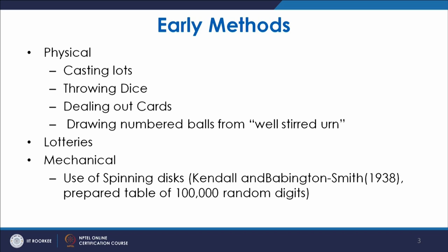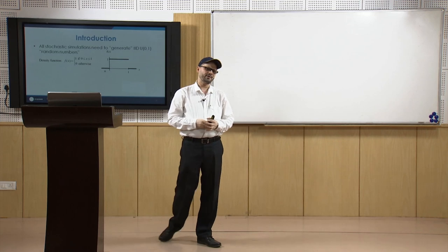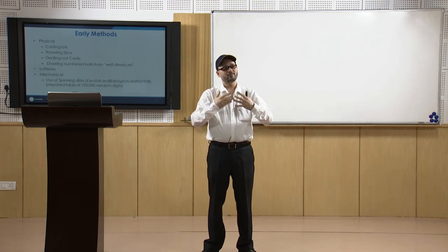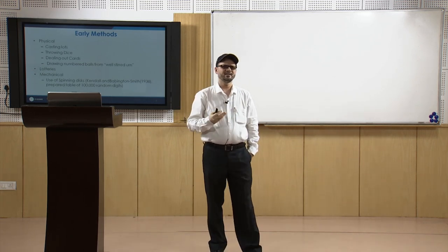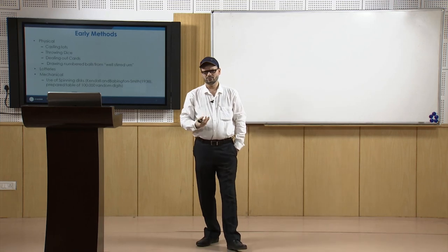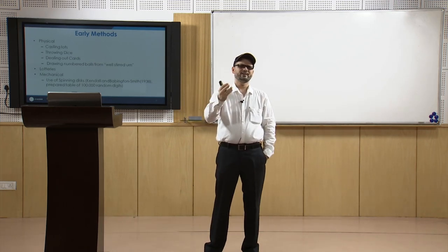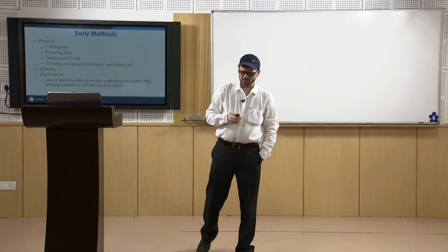Among early physical methods for generating random numbers: casting lots, throwing dice, dealing out cards, and drawing numbered balls from a well-stirred urn. Lotteries, both in earlier days and today, also use random numbers. Mechanical means include use of a spinning disk, suggested by Kendall and Babington Smith, who prepared a table of 1 lakh random digits.